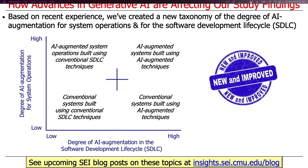Since we wrote the report, we've thought about this more carefully and realized there's a broader taxonomy. There are two dimensions or axes. The x-axis is degree of augmentation in the software development lifecycle — the SDLC — which encompasses the methods, processes, tools, techniques, and programming languages we historically use to build software. Up until very recently, these were not AI-augmented, but they are now getting increasingly AI-augmented.